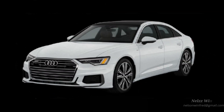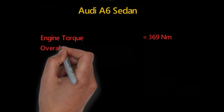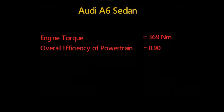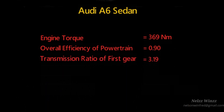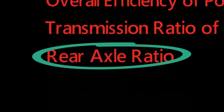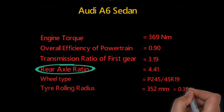Let's select one vehicle and find out its tractive force. This is an Audi A6 sedan car. You can find the specs of this car from Google, or a link is available in the description below. The engine torque of this vehicle is 369 Nm. The Audi A6 is a four-wheel drive vehicle, so the overall efficiency of the powertrain is 0.90. The transmission ratio of first gear is 3.19, and the rear axle ratio is 4.41. The wheel type of the Audi A6 is P245/45 R19, and for those wheels the tire rolling radius is 352 mm, which means 0.352 m.